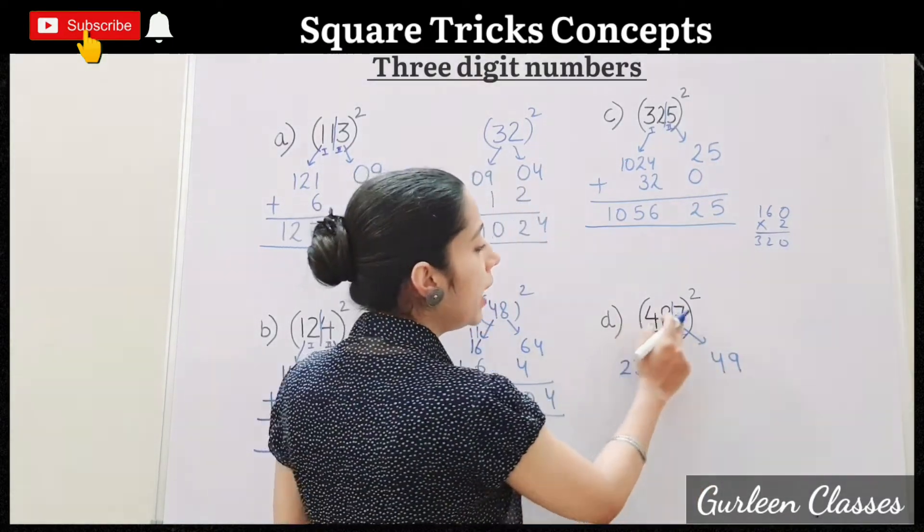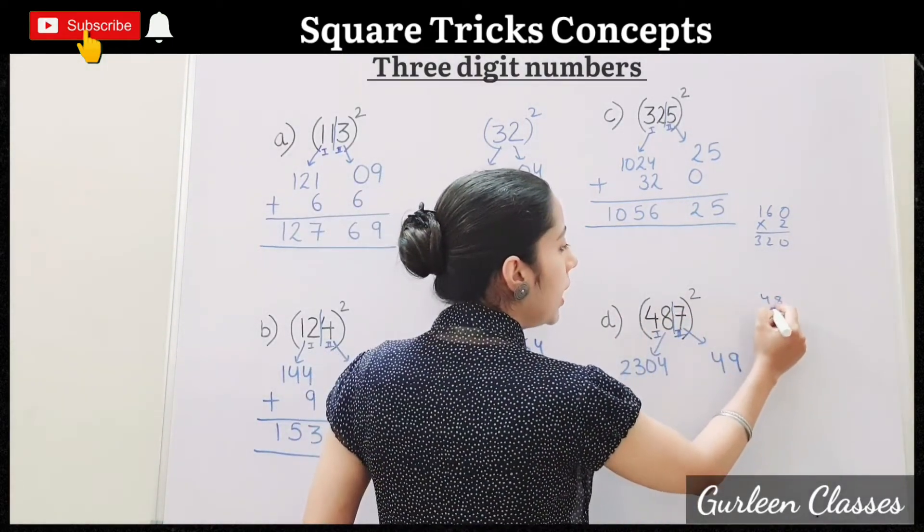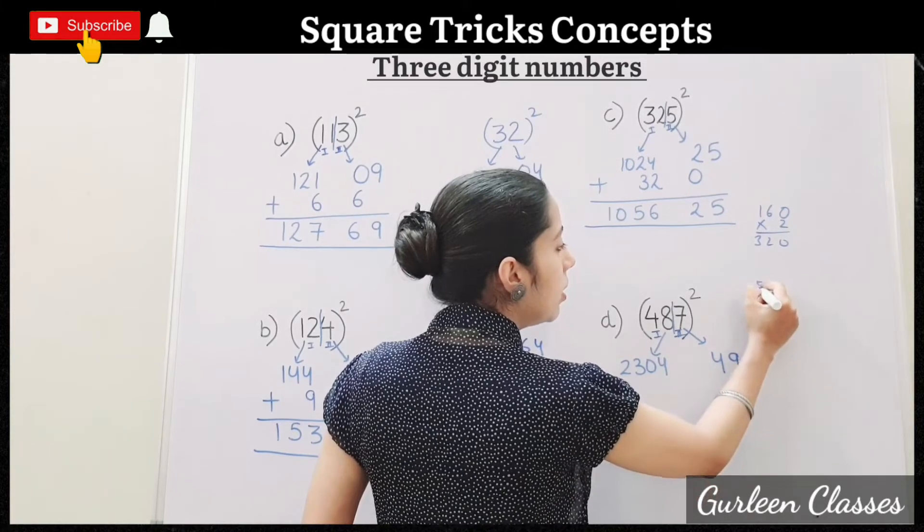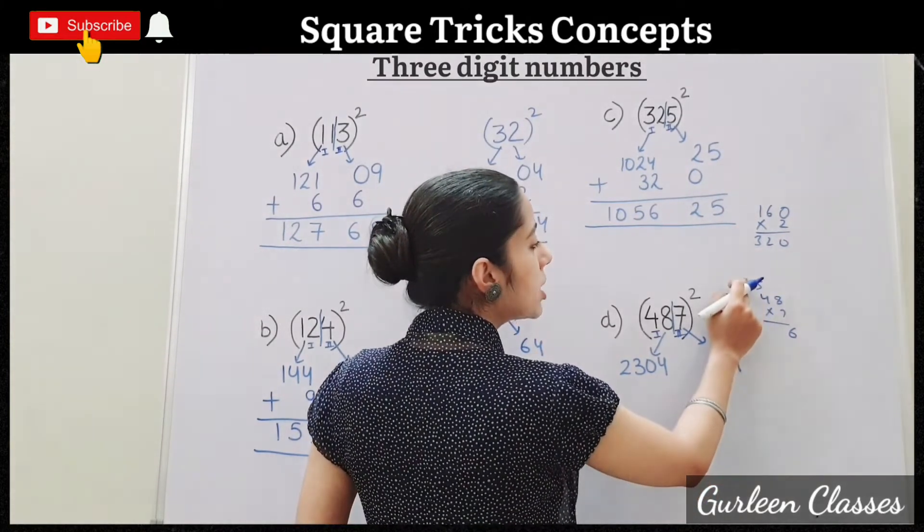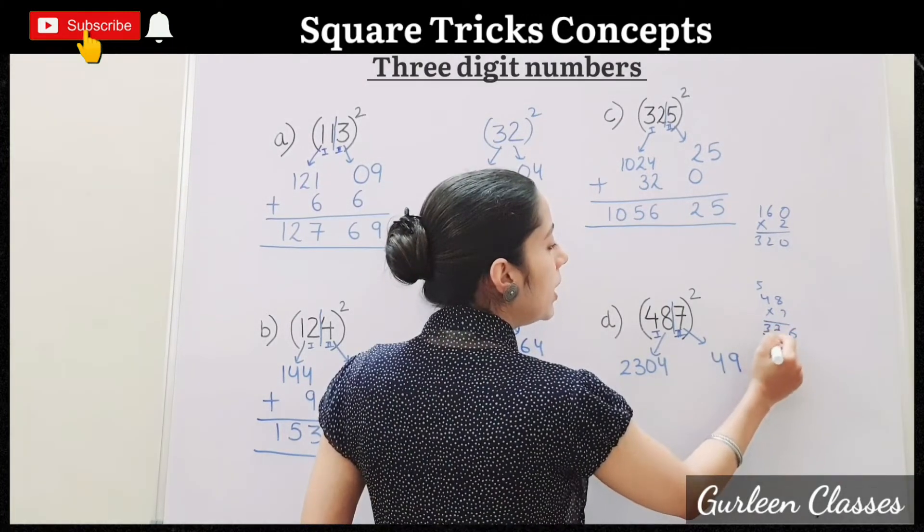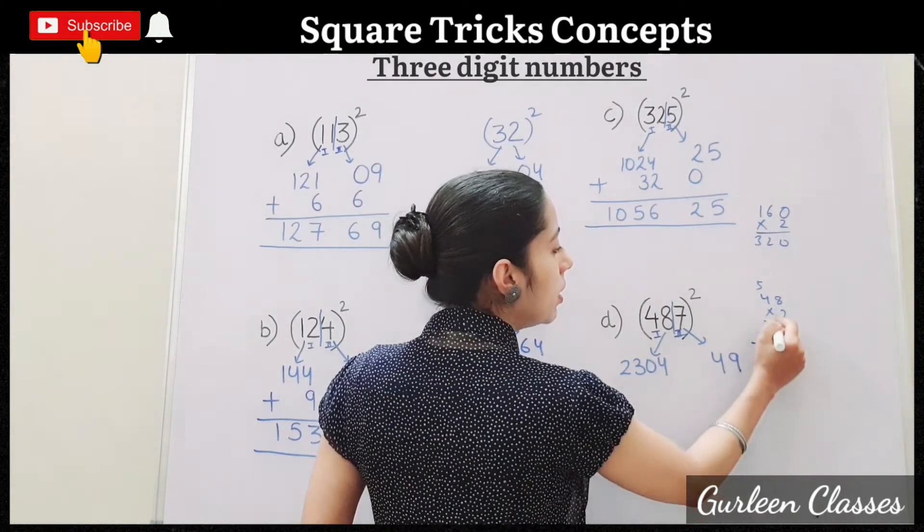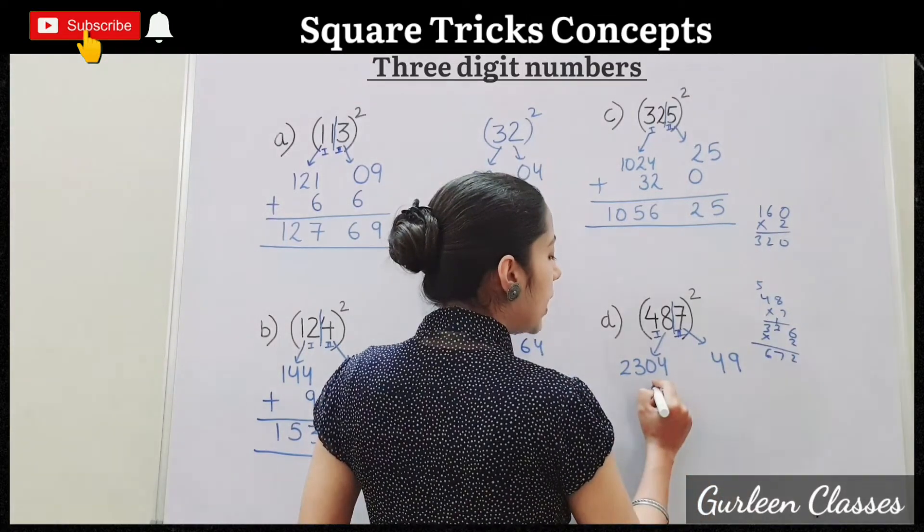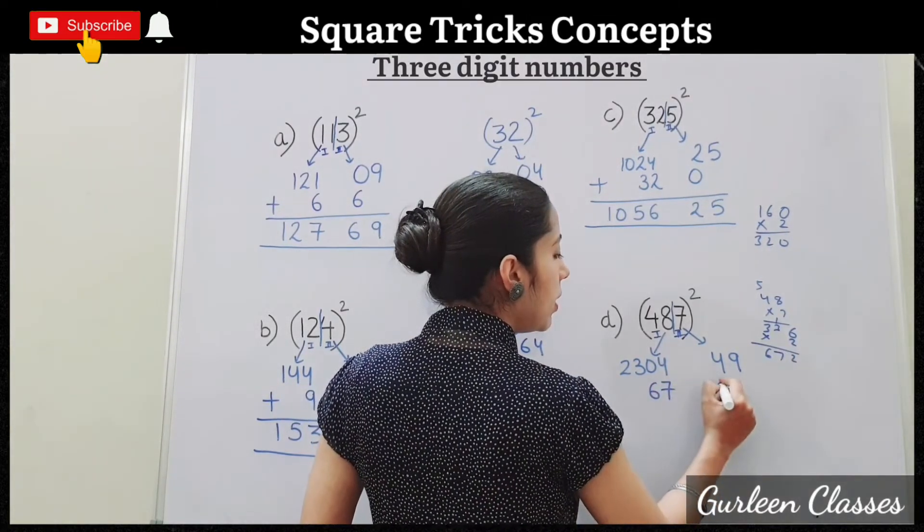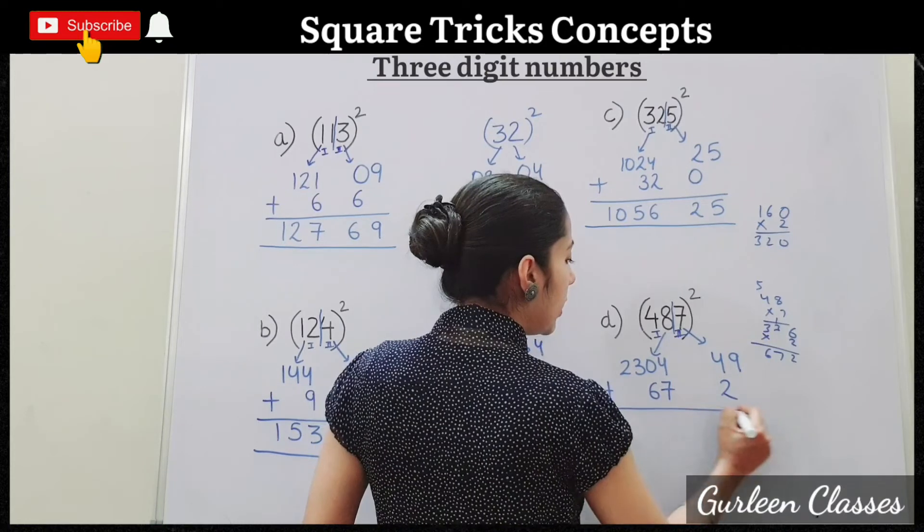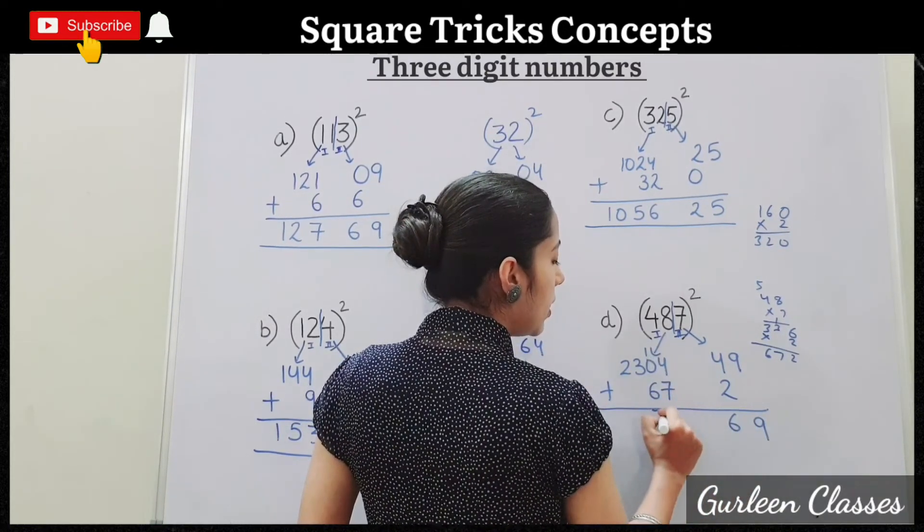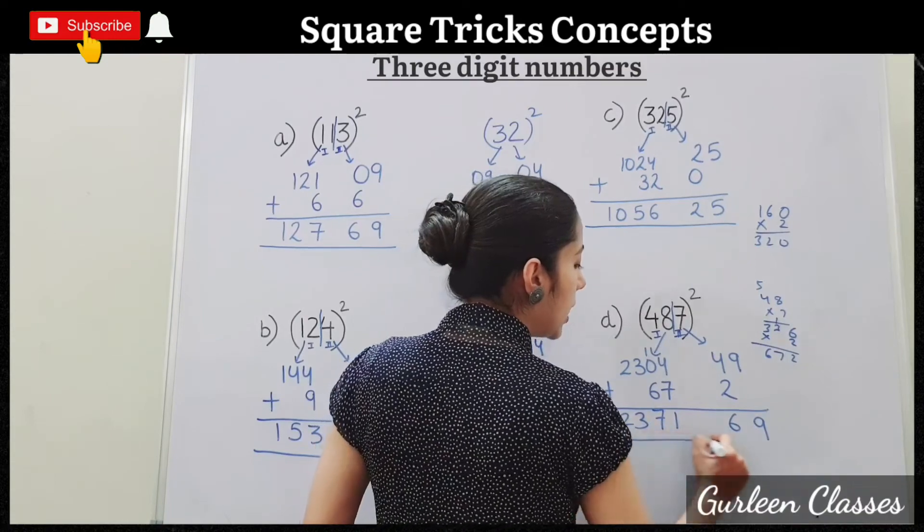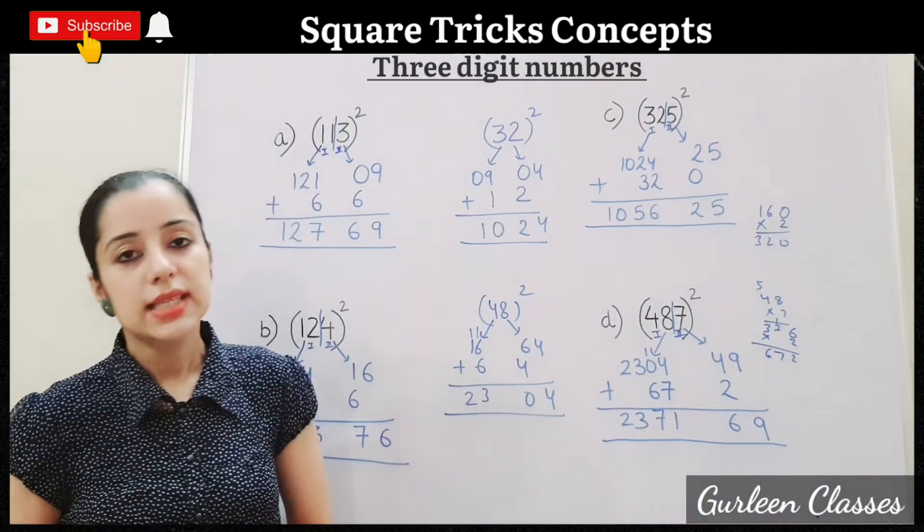Now multiply 48 into 7. 48 into 7. 7 eights are 56. 7 fours are 28. 28 plus 5 is 43. Now multiply by 2. 6 twos are 12. 3 twos are 6, 7. 3 twos are 6, 72. So write here 6, 7, 2. We will add 9, 6, 11, 7, 3, 2. Answer is coming 237,169.